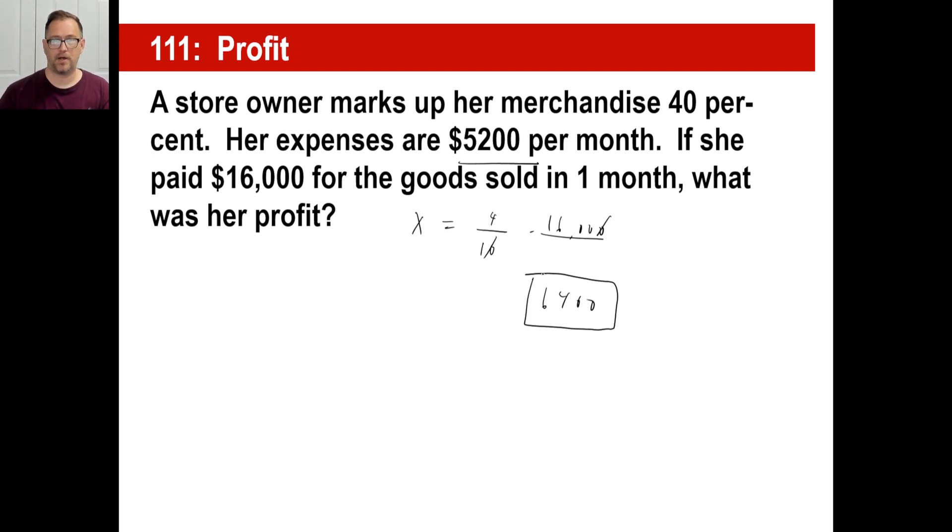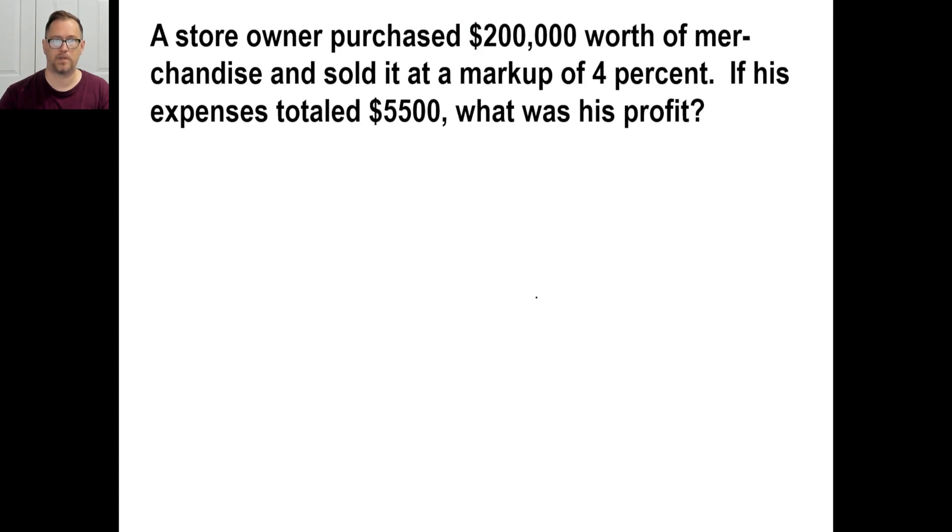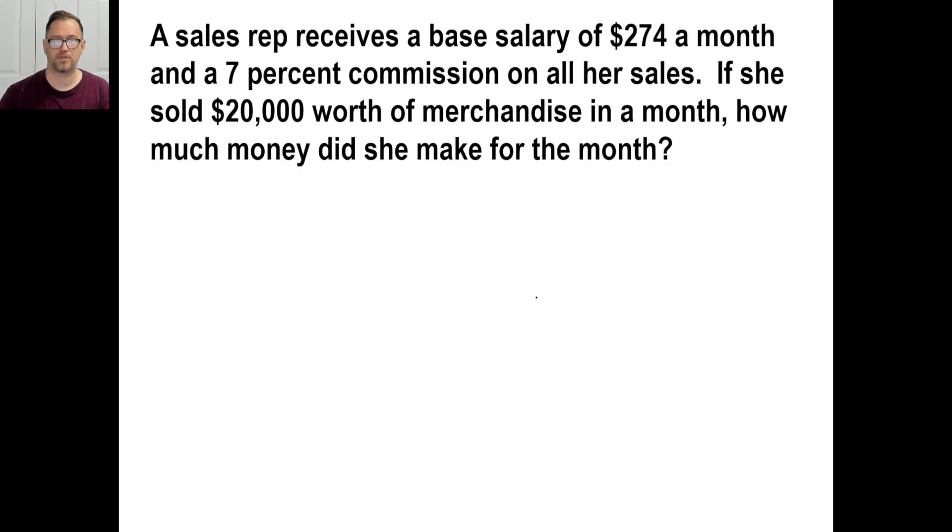But the profit also has to take into account her expenses of $5,200 a month. So, you subtract $5,200 from $6,400, so she makes, as a profit, $1,200. And there you go. Okay. All right. Try page 345. We have those two problems, and then we will take a look at what's going on next. So, anyway, pause it and try it A.